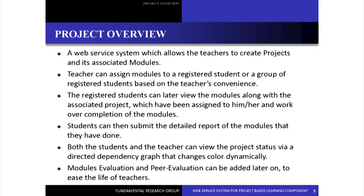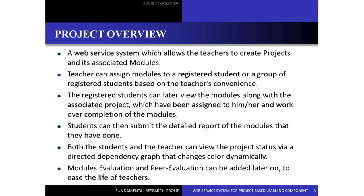What is the directed dependency graph? It tells about the dependency between the various modules in a project. It may happen that a group of students working on one particular module are waiting for another module to produce its output — that module may depend on another. The dependency graph shows the actual status of that particular project. Module evaluation and peer evaluation are still to be added; right now the project is in the phase of showing the dependency graph.